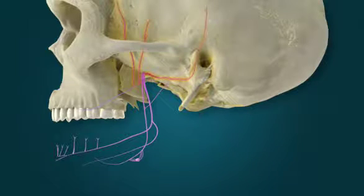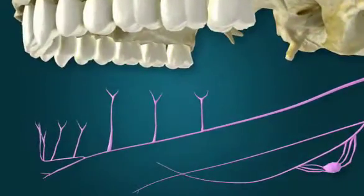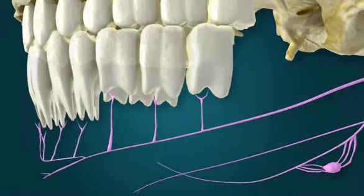Its motor fibers innervate the muscles of mastication, the tensor tympani muscle, and the tensor palatini muscle. As a sensory nerve, the mandibular nerve receives impulses from sensory receptors in several locations.